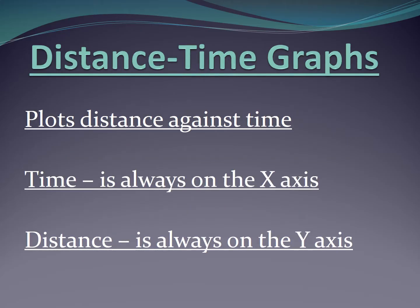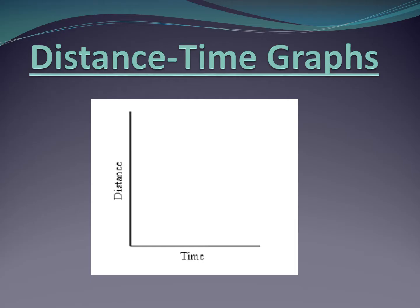When we're talking about distance-time graphs, time is always on the x-axis and distance is always on the y-axis. To remind ourselves of the acronym DRYMIX, something on the y-axis is the dependent variable. So here, this is the dependent variable. How much distance is covered depends on the time.